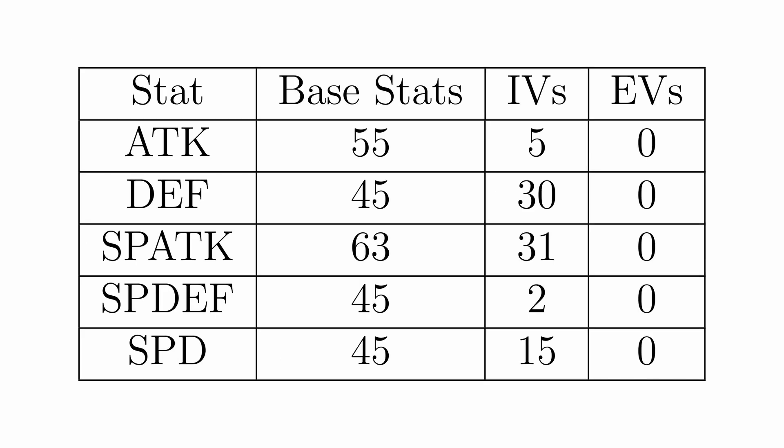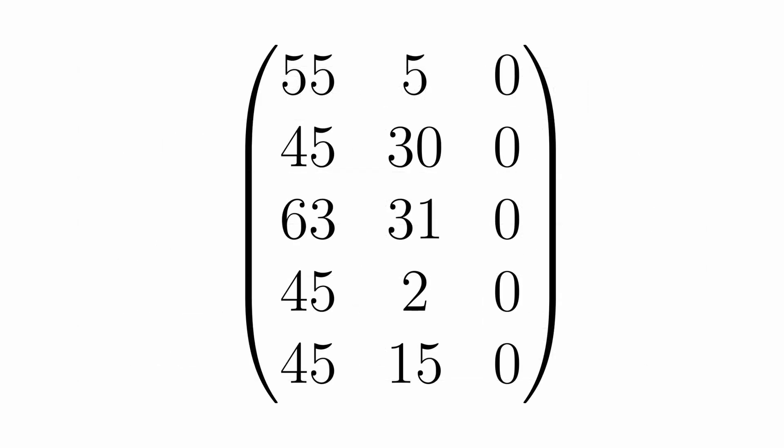Alright, so to build such a matrix, we effectively make a table. We can list each type of stats in columns, so base stats get a column, IVs, and EVs get the same thing, and we'll just ignore nature as we can deal with that afterwards.